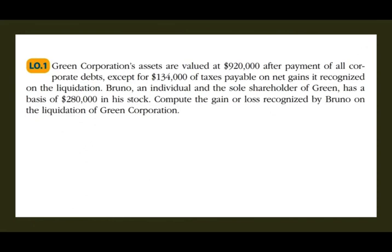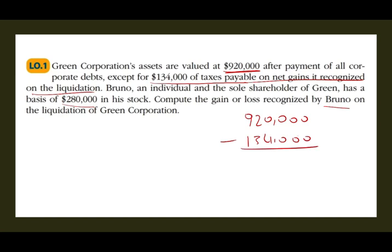Let's take a look at an example to illustrate the concept. Green Corporation's assets are valued at $920,000 after payment of all corporate debt, except $134,000 of taxes payable on the net gain it recognized on the liquidation — so there's still some debt related to the liquidation. Bruno, an individual and the sole shareholder of Green, has a basis of $280,000. We need to compute the gain or loss recognized by Bruno on the liquidation. The amount realized is the value of the property Bruno receives, but Bruno is responsible for the $134,000 in taxes because the corporation is still responsible for that.